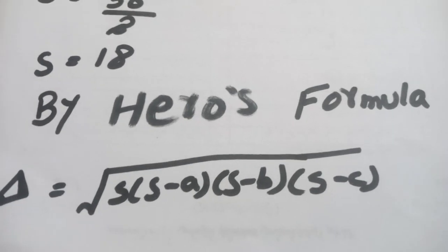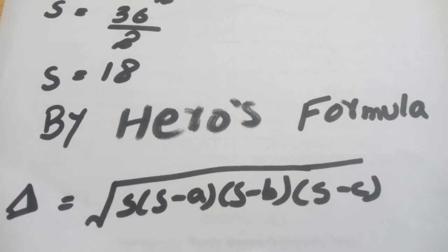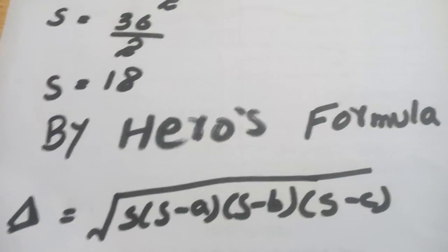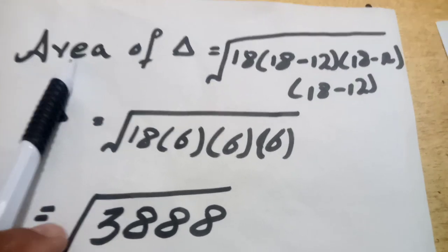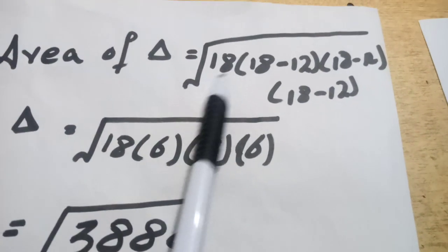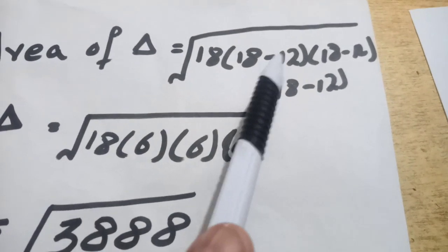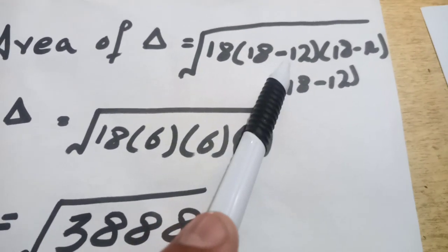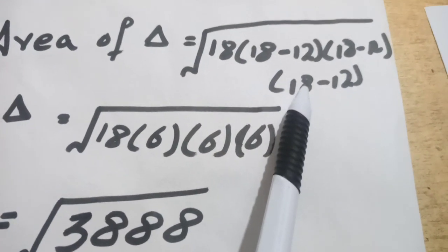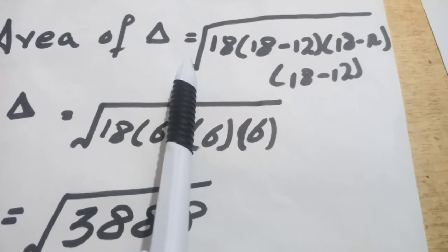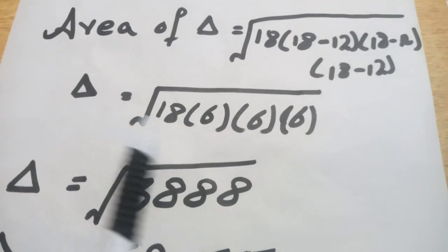We will apply Heron's rule and calculate area of an equilateral triangle. So we'll apply all values in the formula: s into s minus a. The value of s is 18, the value of a is 12, s minus a into s minus b into s minus c under the root.